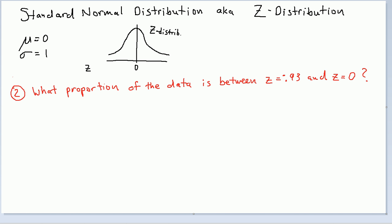Okay, so once again, we're still in the standard normal distribution where mu equals 0 and sigma equals 1. And the second question comes in the form of what proportion, so I'm using the word proportion instead of percentage here just to show you that they're quite interchangeable. What proportion of the data is between Z equals negative 0.93 to Z equals 0?